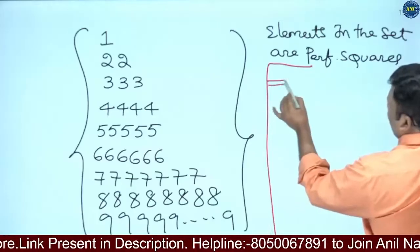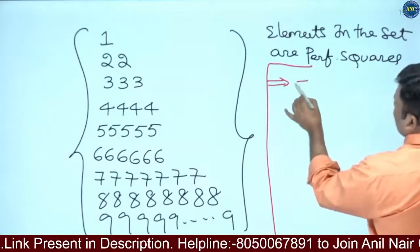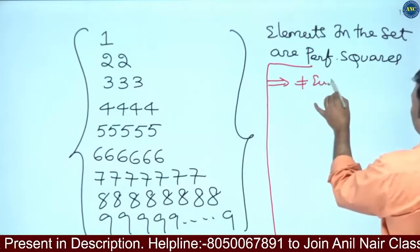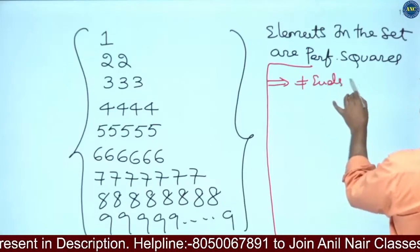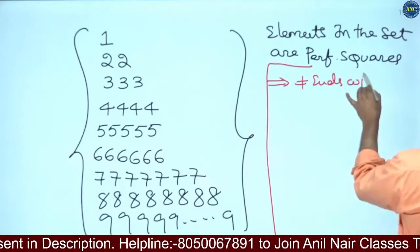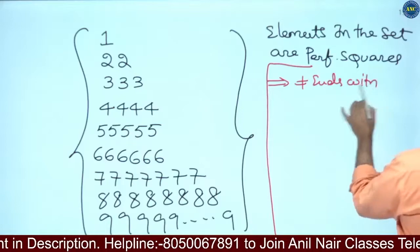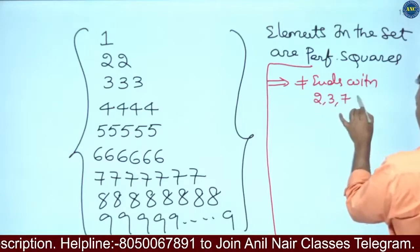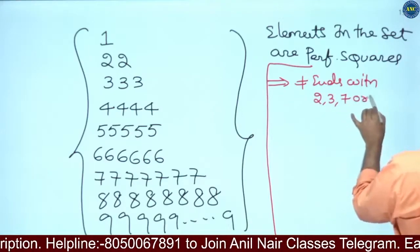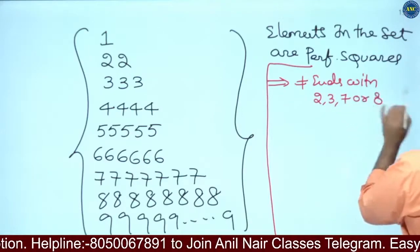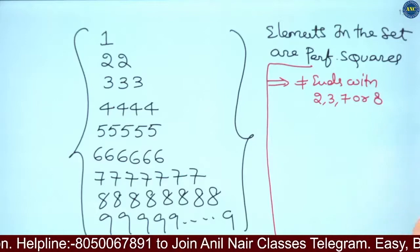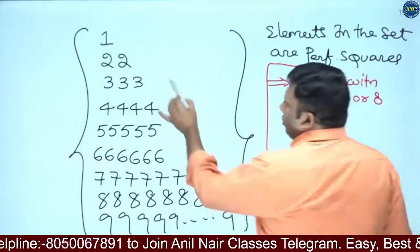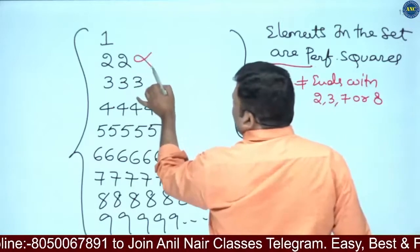Now, once we understand all the properties, we will check one by one. A perfect square never ends with 2, 3, 7, or 8.